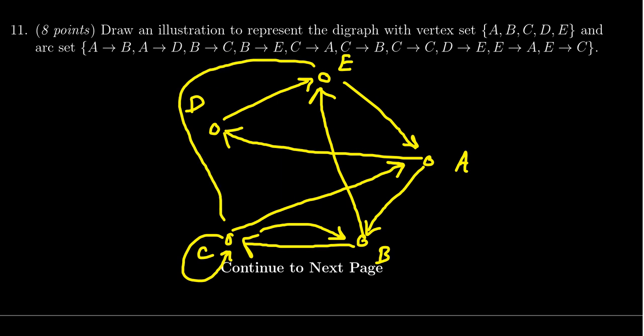And so that gives us the digraph we're looking for. You could have drawn it a little bit differently, but the critical ingredients you have to have are the five vertices and you have to have—how many are there?—one, two, three, four, five, six, seven, eight, nine, ten arcs. The arrowheads are important; you need to have them. In this case you have arcs going in both directions, so you include both of those as well.